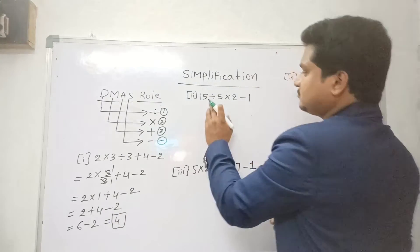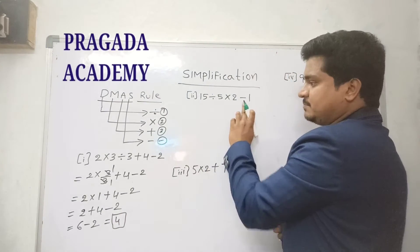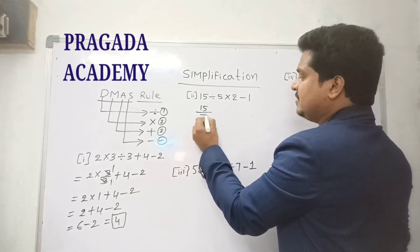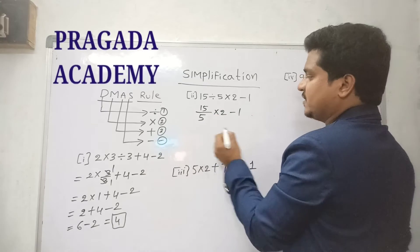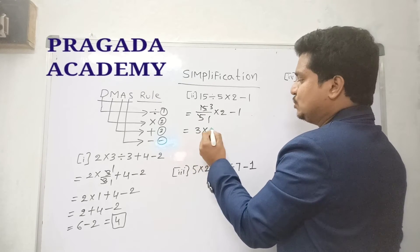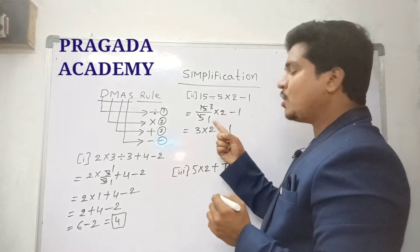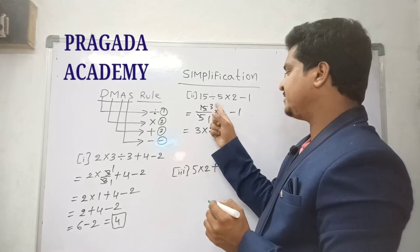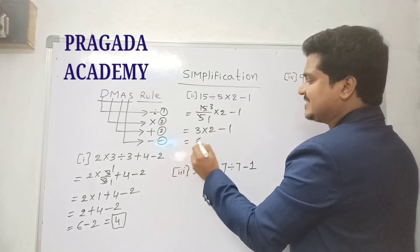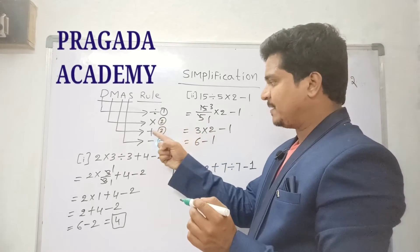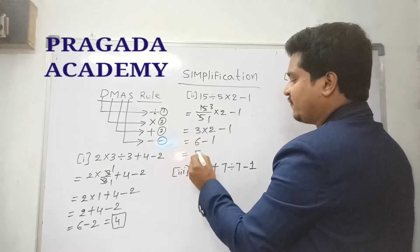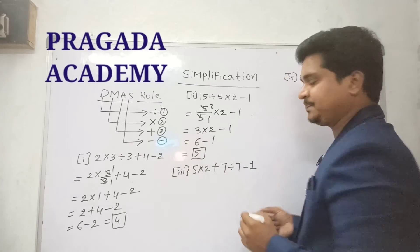Second problem: 15 ÷ 5 × 2 − 1. Operators given: ÷, ×, −. According to DMAS rule, first do division. 15 ÷ 5 = 3. If the denominator is 1, no need to consider it, so 3 by 1 is just 3. After division, do multiplication: 3 × 2 = 6 − 1. We don't have plus here, so go to minus: 6 − 1 = 5. The answer is 5.